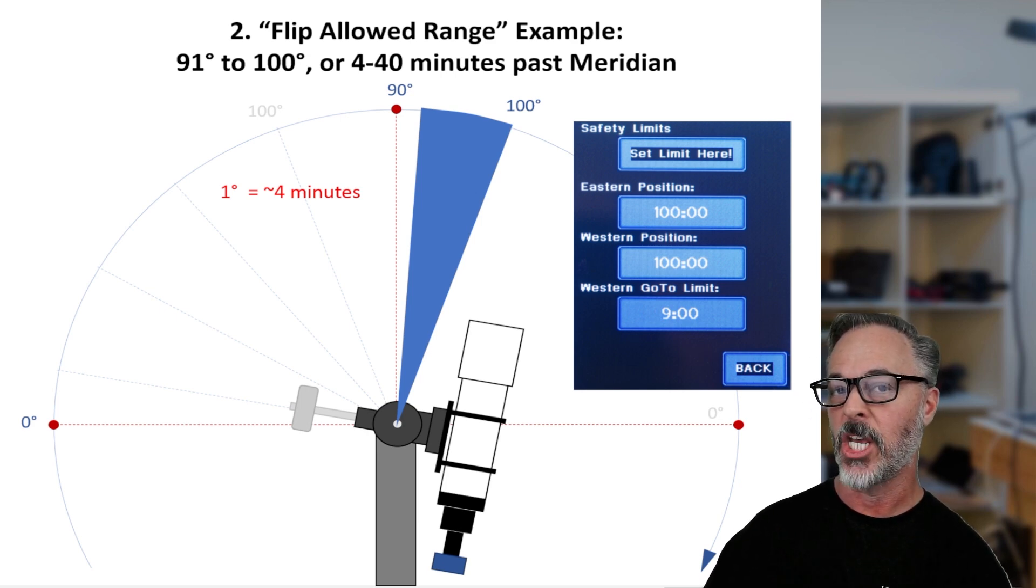Now this is going to be important because we had to do a little bit of translation when we get to the imaging application. It's probably going to ask for things in terms of minutes past the meridian. So right now we know that our allowable range that we have just set up is four minutes past the meridian to 40 minutes past the meridian.